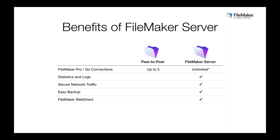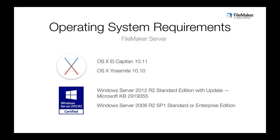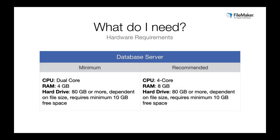What do you need in order to run FileMaker Server? On the operating system side, FileMaker Server can run on either Mac or Windows. On the Mac side, we support OS X 10.10 or 10.11. On Windows, it runs on Windows Server 2008 R2 or Windows Server 2012 R2. For hardware, at minimum FileMaker Server requires a dual-core CPU with 4GB of RAM. We recommend a four-core CPU with 8GB of RAM, and in both cases at least 80GB storage capacity with at least 10GB of free space at all times.